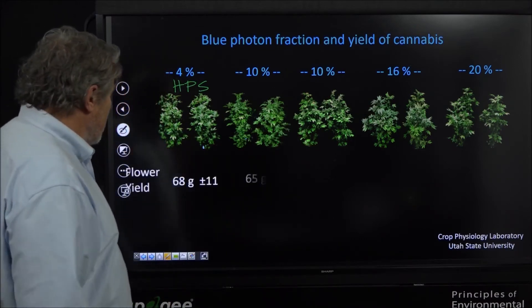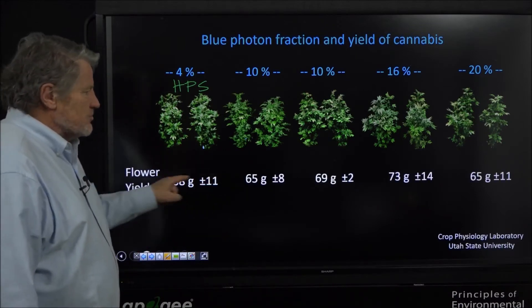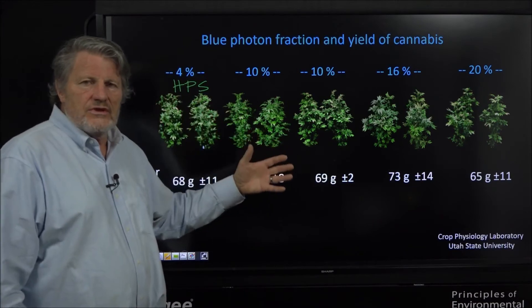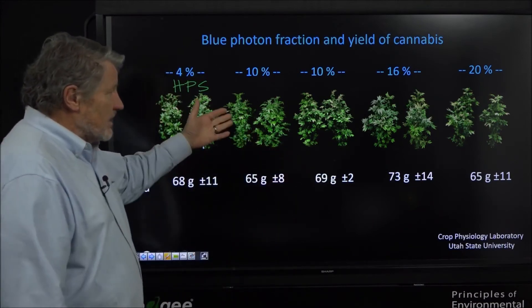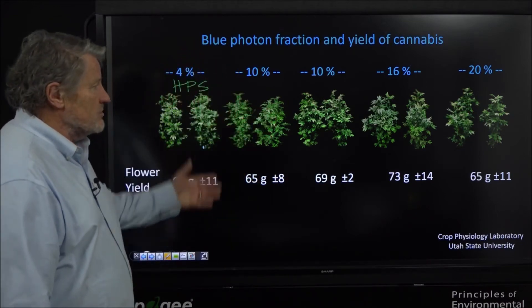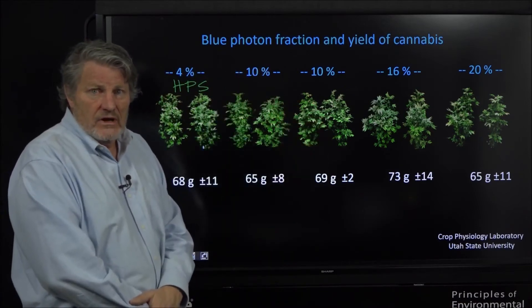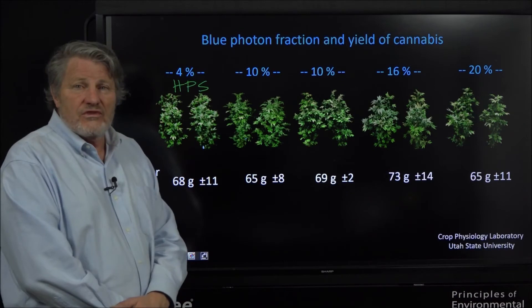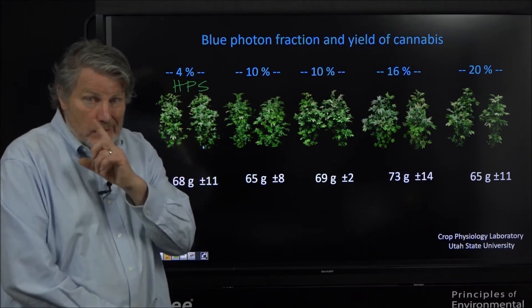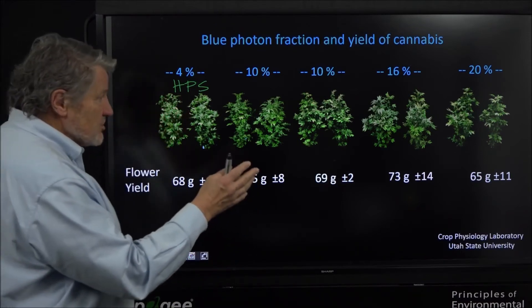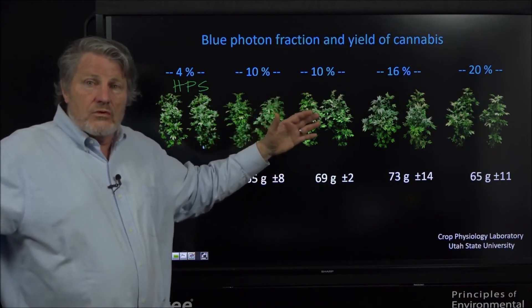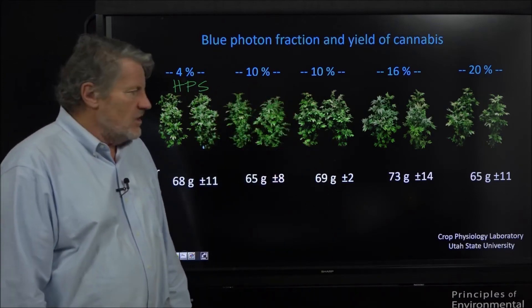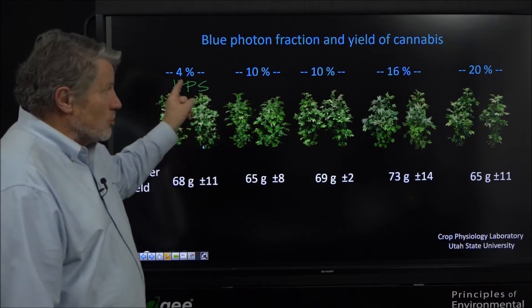What about yield? Here's the flower yield. No difference. It looks like there's a trend and then it goes back down. Look at the standard deviations - there is no difference in yield at all among these treatments, indicating that the photosynthesis was similar in all these treatments and the partitioning to flowers was similar. This is an amazing slide because there are a lot of people that really feel the colors of light are just magic to cannabis yield - you need just the right colors. This doesn't prove there'll never be a difference, it's just in this carefully done study where all the plants were in one big room and had the same air, the same humidity, the same CO2, we didn't see a difference in yield.